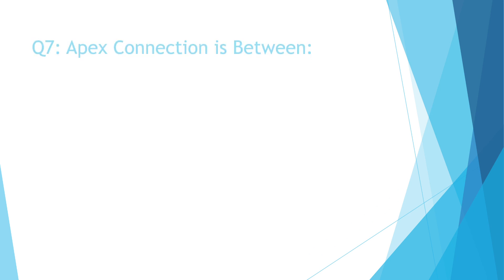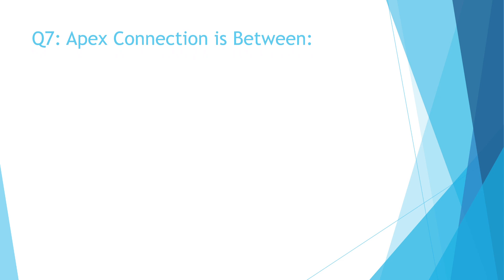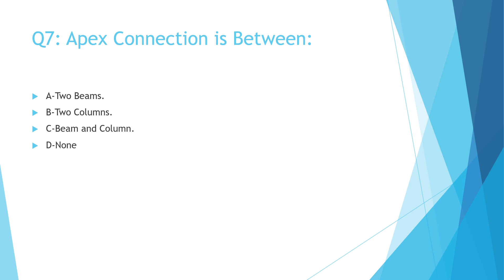Question number 7: Apex connection is between — a. two beams, b. two columns, c. beam and column, d. none. The correct answer is a. Two beams.